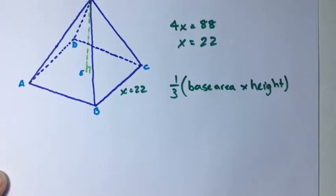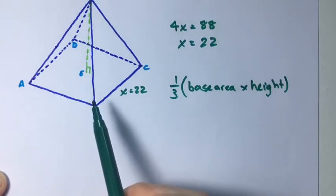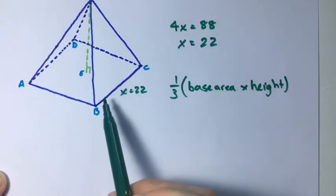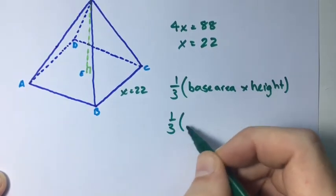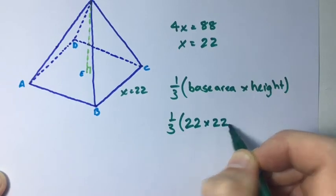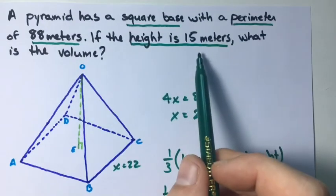Well, we can find the base area very easily because we know it's a square, and the area of a square is just side squared. So we have one-third times 22 times 22 times our height which is 15.